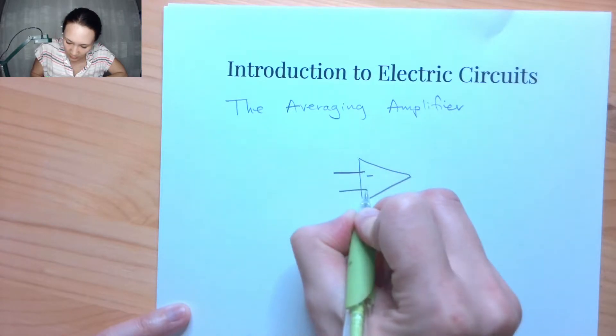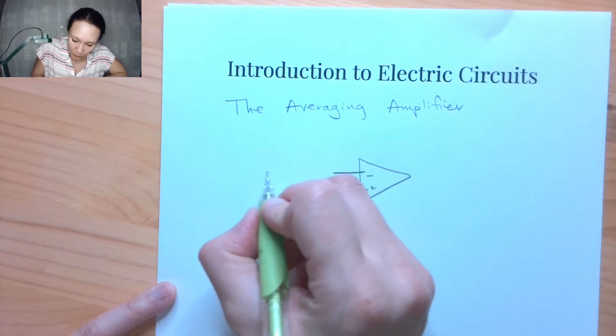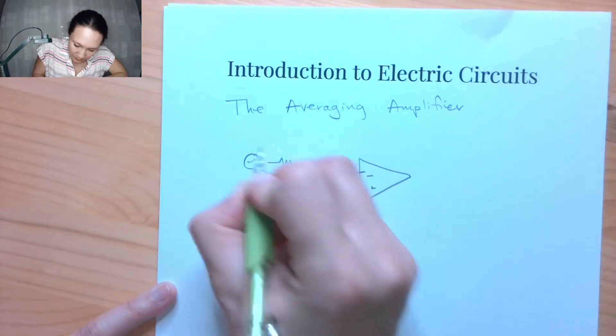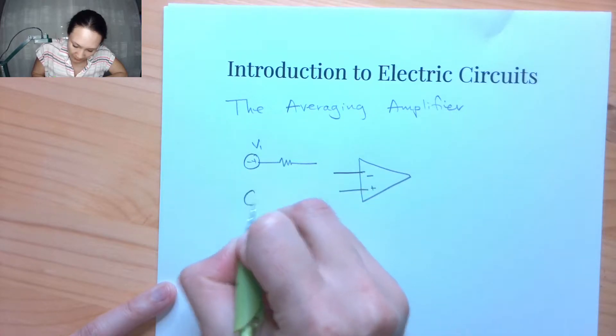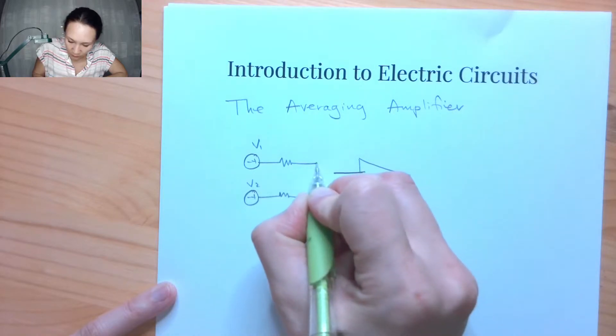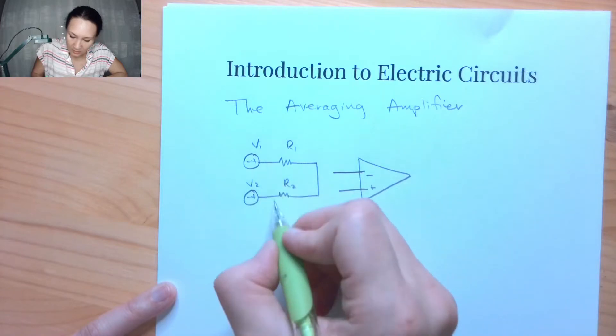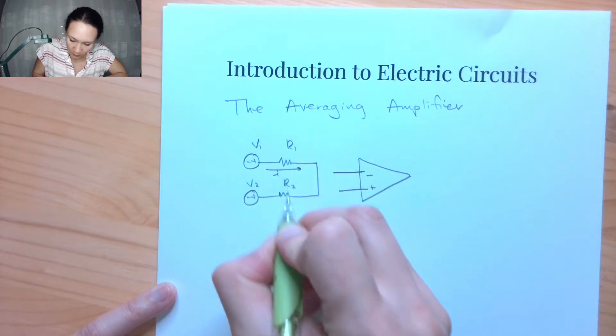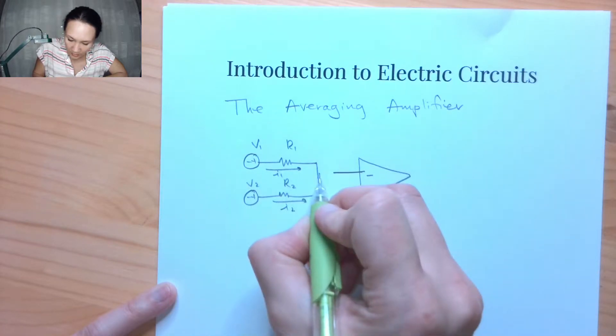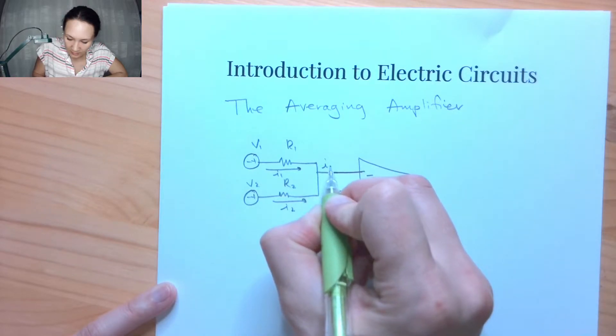So I'm going to show you an example of an inverting averaging amplifier, and we'll just do it with two input sources. Suppose we have a V1 and a V2. We have resistors R1 and R2, and then these two are going to, the current that comes out of these is going to combine. This is I1, I2. It combines at this node here, and I'll call this I.